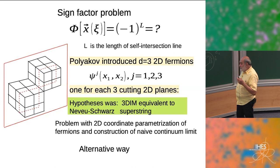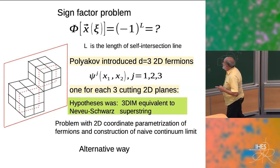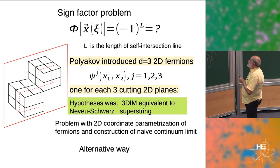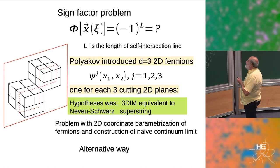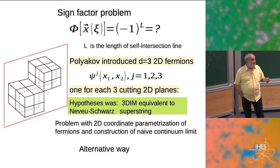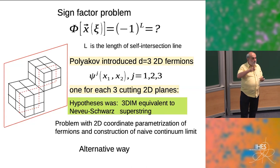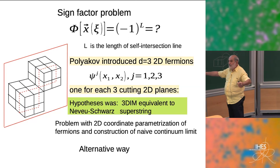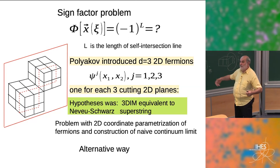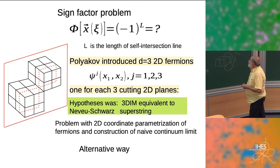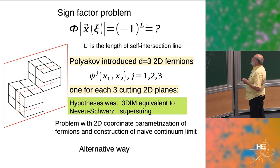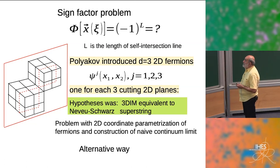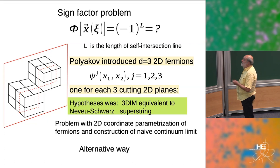Polyakov's original idea: if you write minus one to the power of L — the length of the self-intersection — that's good enough to avoid overcounting. One can achieve this in the following way: take, for example, a surface with two self-intersection lines of length two. You cut it by planes, each region.